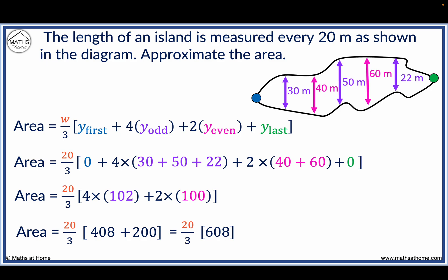To calculate this, we do 20 divided by 3 times 608, which can be evaluated on a calculator as 4053 metres squared.